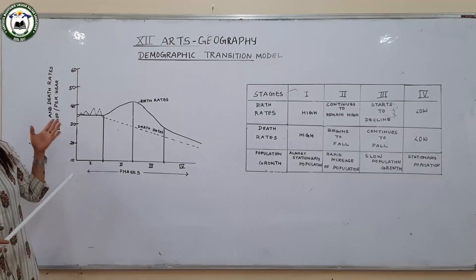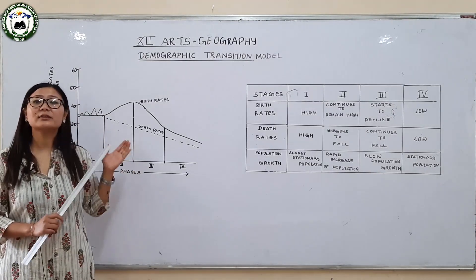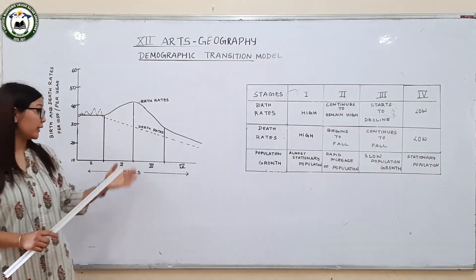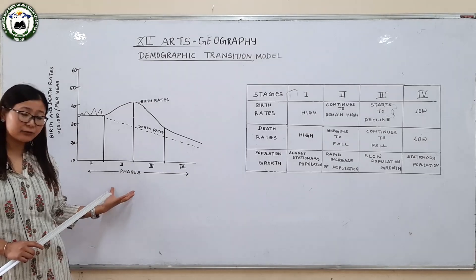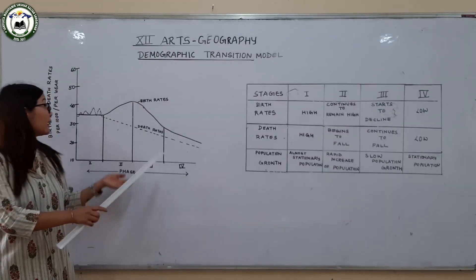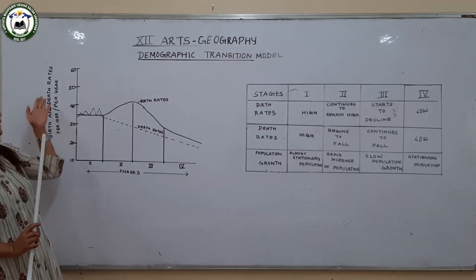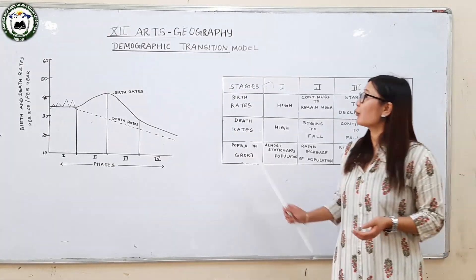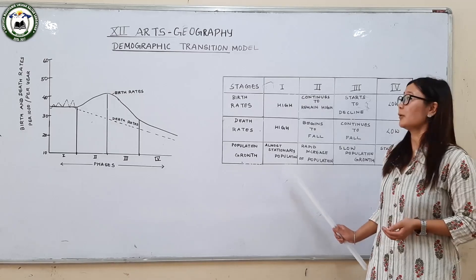Here you can see the diagram of the Demographic Transition Model. In the horizontal axis, the phases or stages are given: Stage 1, Stage 2, Stage 3, and Stage 4. In the vertical axis, you can see birth and death rates per 1000 per year. We are now going to discuss each stage of the Demographic Transition Model.